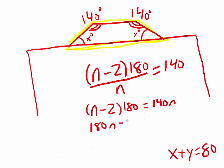n minus 2 times 180 equals 140n. 180n minus 360. I'll distribute that 180. Equals 140n. 40n equals 360. And then n equals 9.